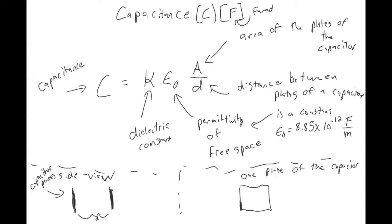The last term we haven't talked about yet is the dielectric constant, and this depends on the material. For example, if you had the two plates of the capacitor set up in a vacuum, then the dielectric constant between the two plates would be equal to one. If you had air in between the two plates of your capacitor, it's a little more than one — it's like 1.0006.